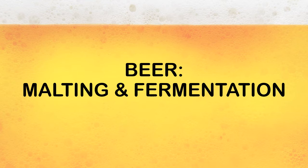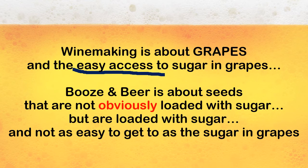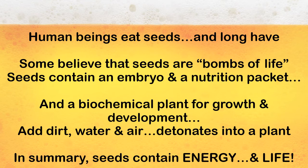We have a few slides on malting and fermentation, because that's the next thing we need to talk about. Winemaking is about grapes or things like grapes — strawberries and other things where there's easy access to sugar. Beer and booze, on the other hand, usually start with seeds. Those of you who eat seeds and nuts know they are not sweet. They are loaded with sugar, but the sugar's in a slightly different form.